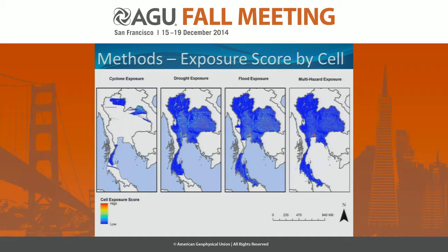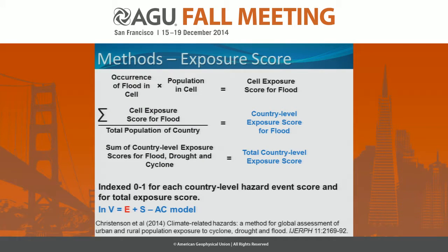Here's what Thailand looks like once you put the LandScan population density dataset in — you can see a big concentration of red in Bangkok because there's a lot of people there. The higher the population density and the more the hazard, the higher the cell value. In our model, we divide by total population for the country to factor that in, so it is population weighted. You have the occurrence of flood in the cell times the population of the cell as the cell exposure score. Sum all the cell exposure scores over the country, divide by the population of the country — that gives you the country-level exposure score. We did that for flood, drought, and cyclone, then indexed and summed them to get our total country-level exposure score — the E term in our model. This was published earlier this year; Elizabeth Christensen, one of the gap year students, is first author on that paper.